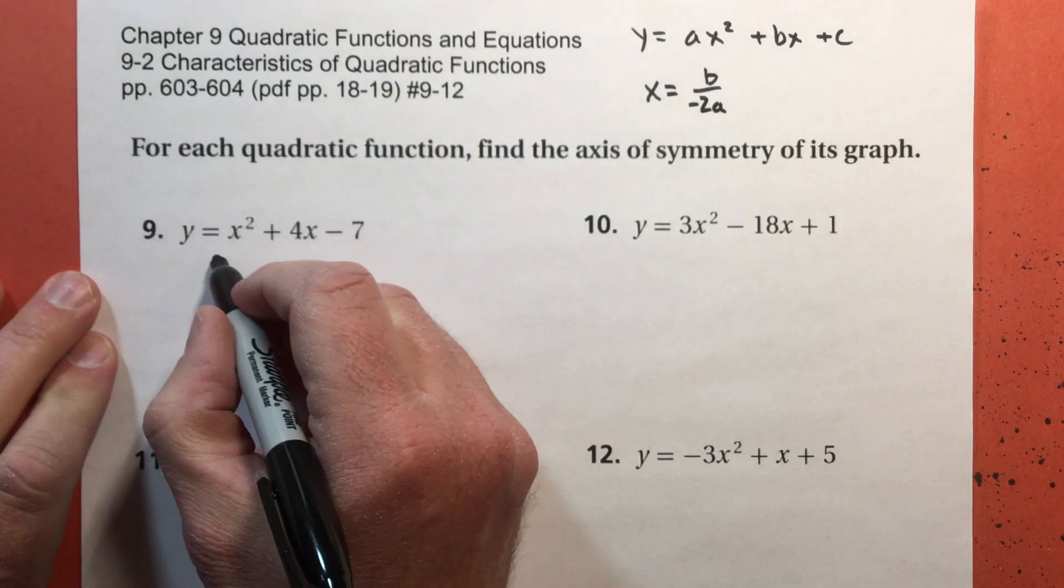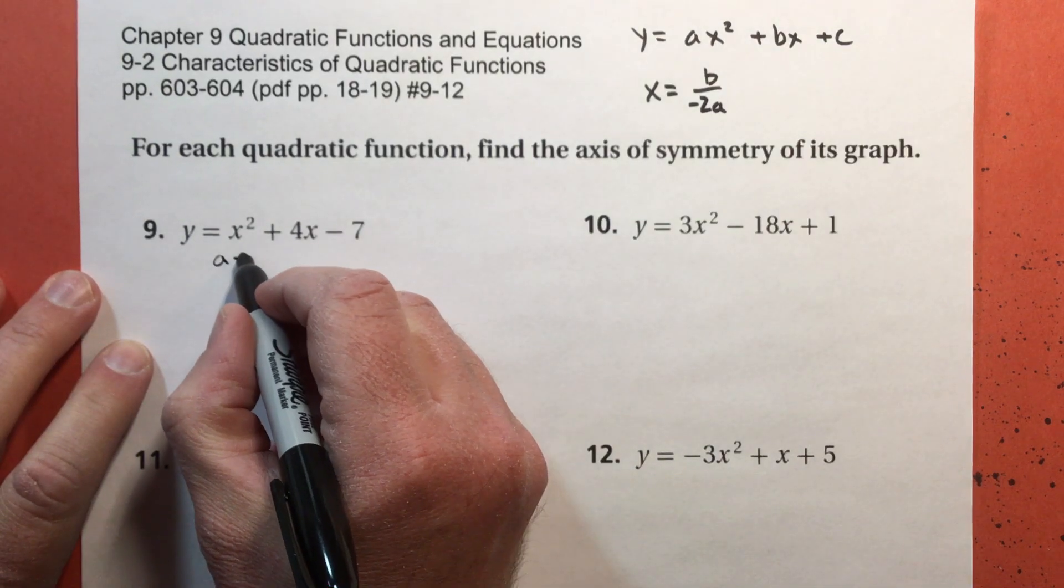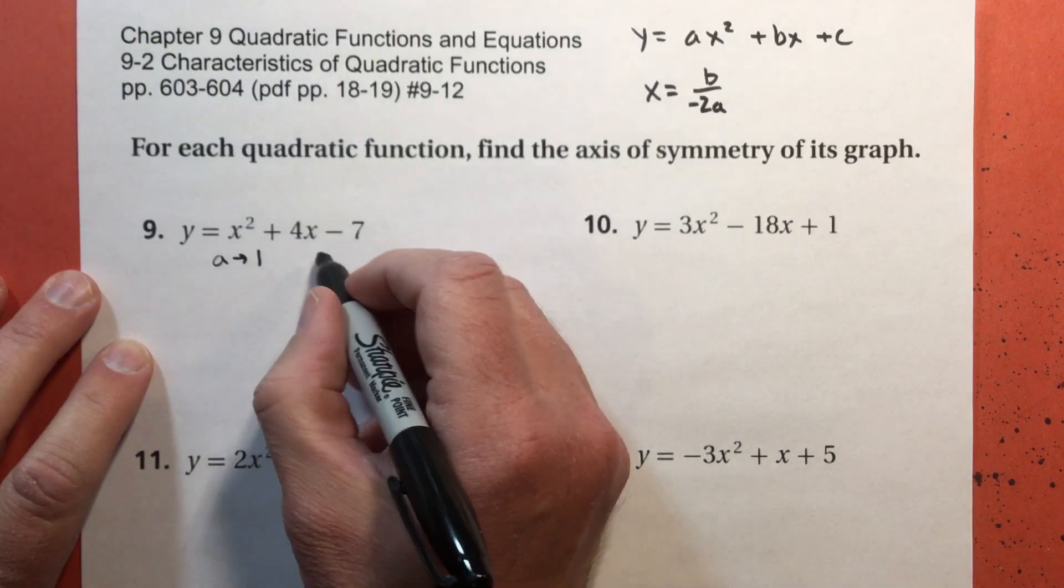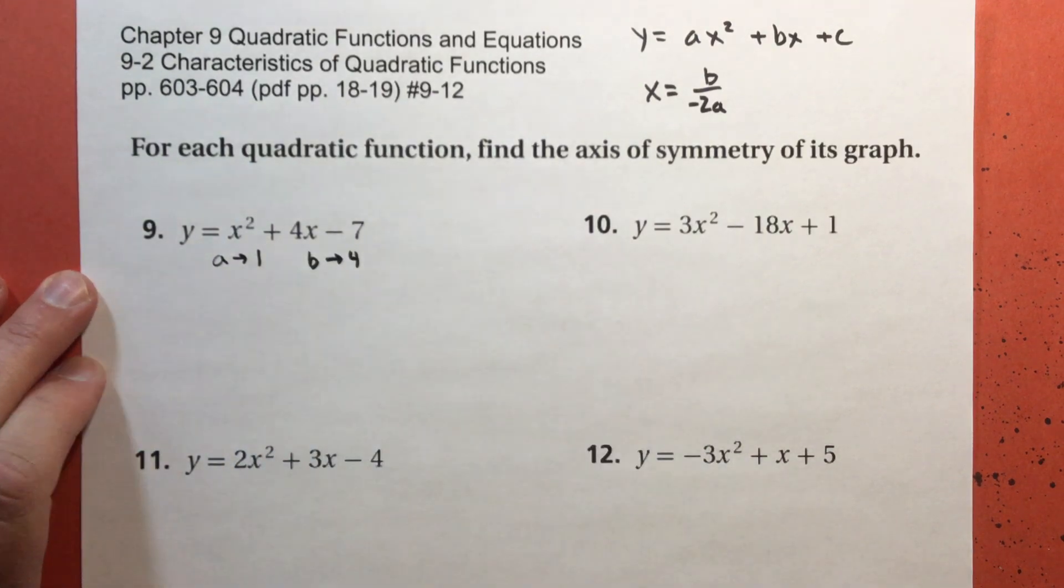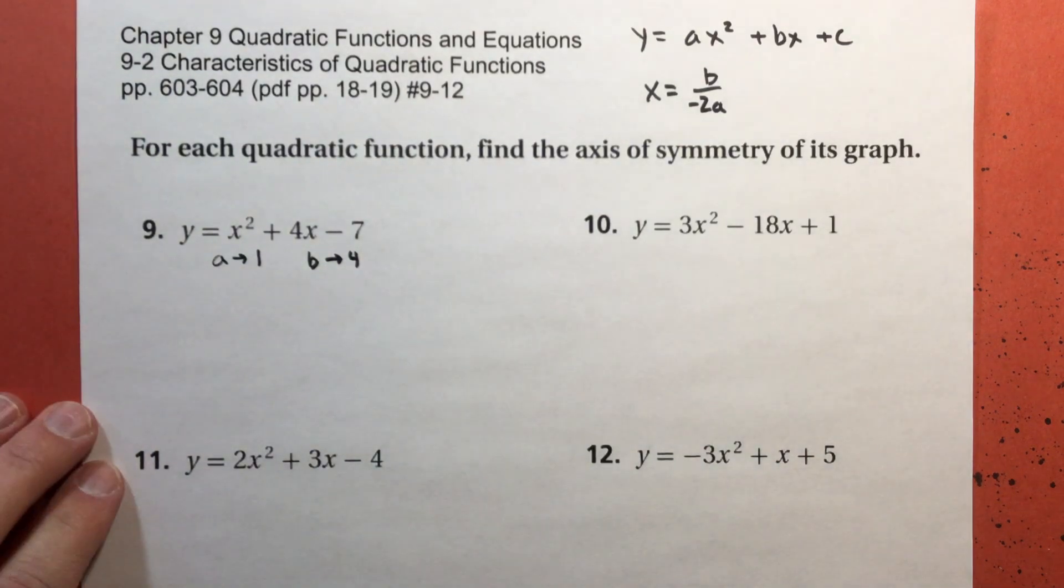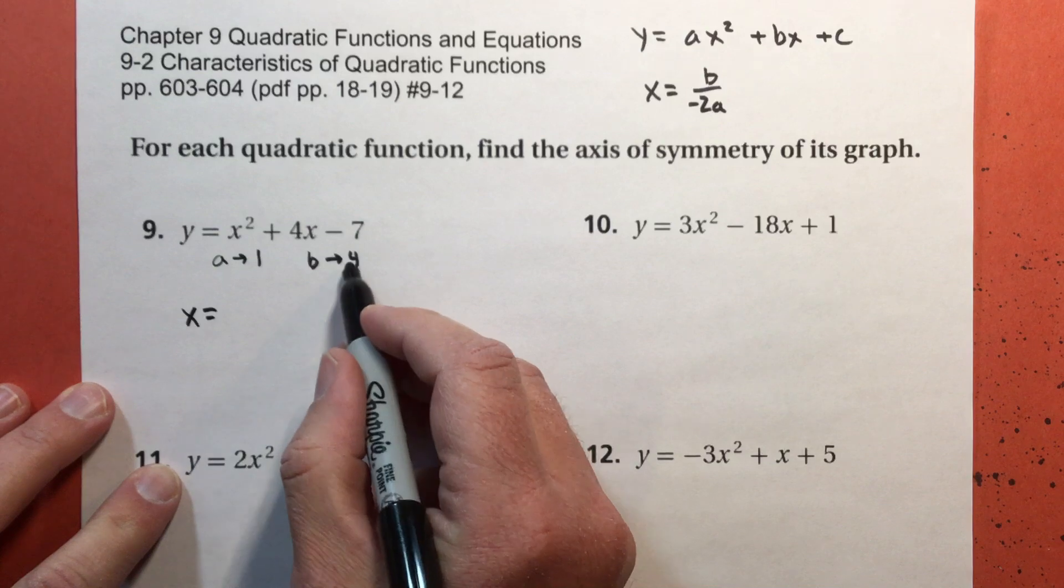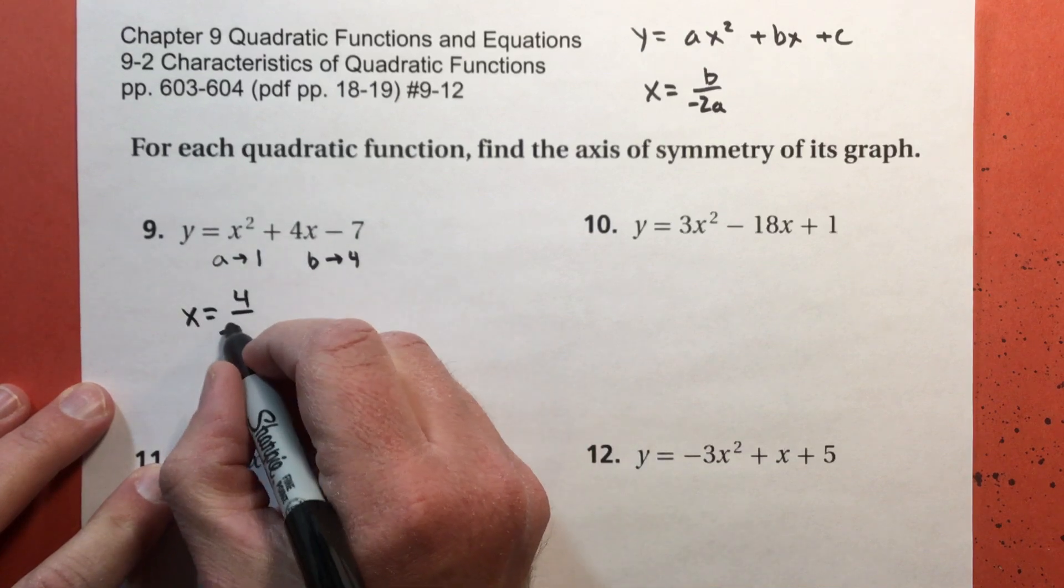All right, so my a is 1. Notice I switched and I wrote an arrow here, okay? My a is 1, and my b is going to be 4. Because of the equal sign, it's a little confusing.